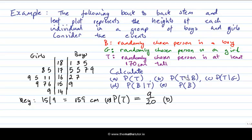Next, the probability of T given B — the probability that the person is at least 170 given that they're a boy. Now we only look at the boys and count how many have height at least 170: one, two, three, four, five, six, seven. We divide by the total number of boys only, which is 10, so P(T|B) = seven over ten.